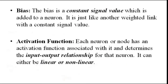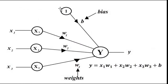The next parameter is bias. The bias is a constant signal value which is added to a neuron, just like another weighted link. This constant value is generally taken as 1, and the weight associated with this constant signal is called the bias. These are the weights associated with the input signals which can be variable, but the bias is a weight associated with a constant signal value.